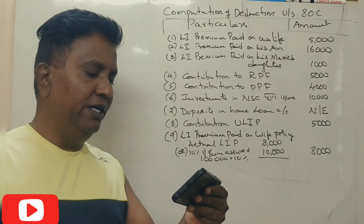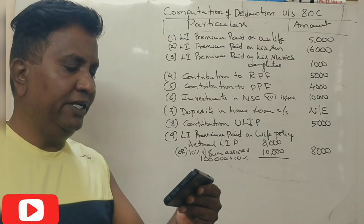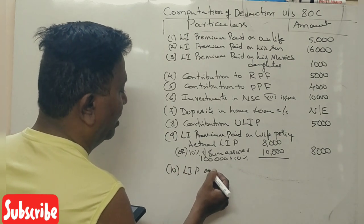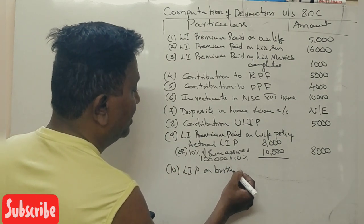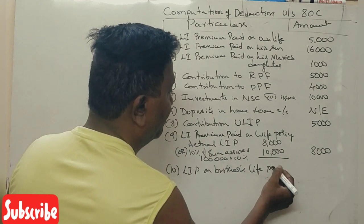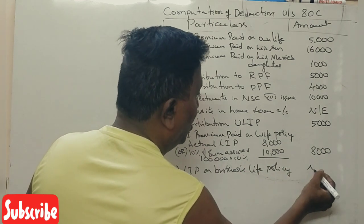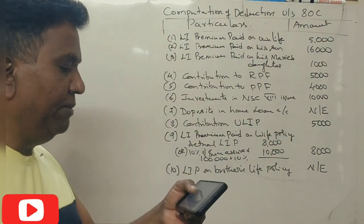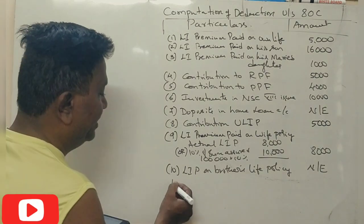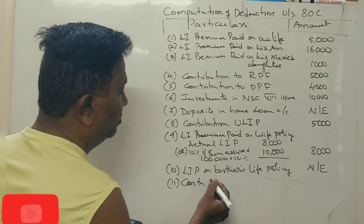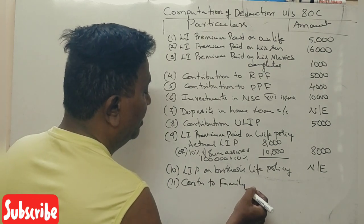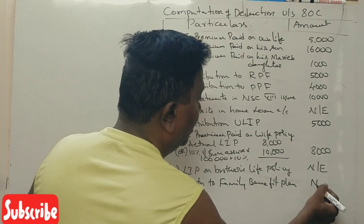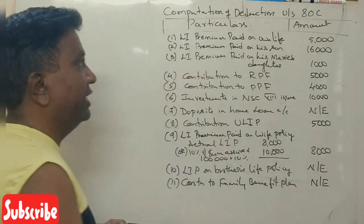Next, life insurance premium paid by him on his brother's life. Yaawa thogadha kaanukku baro dhila. LIC premium on brother's life policy, not eligible. Next, contribution to family benefit fund. Ito kooda baro dhila. Contribution to family benefit plan, ito kooda not eligible for deduction under Section 80C.